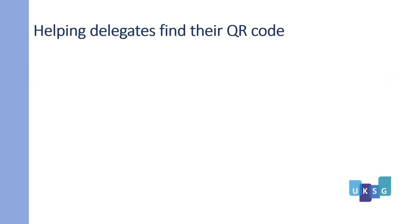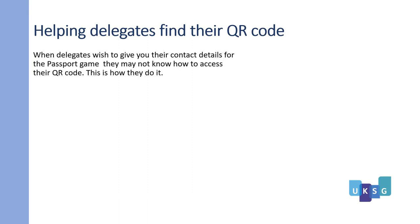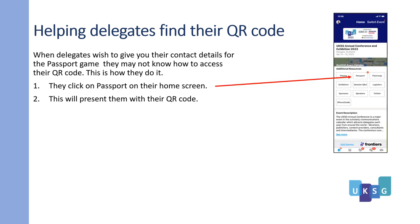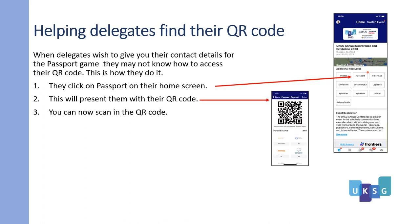Helping delegates find their QR code. When delegates wish to give you their contact details for the Passport game, they may not know how to access their QR code. This is how they do it: they click on Passport on their home screen, which will present them with a QR code. You can now scan the QR code. They can also access their QR code in their own personal details.